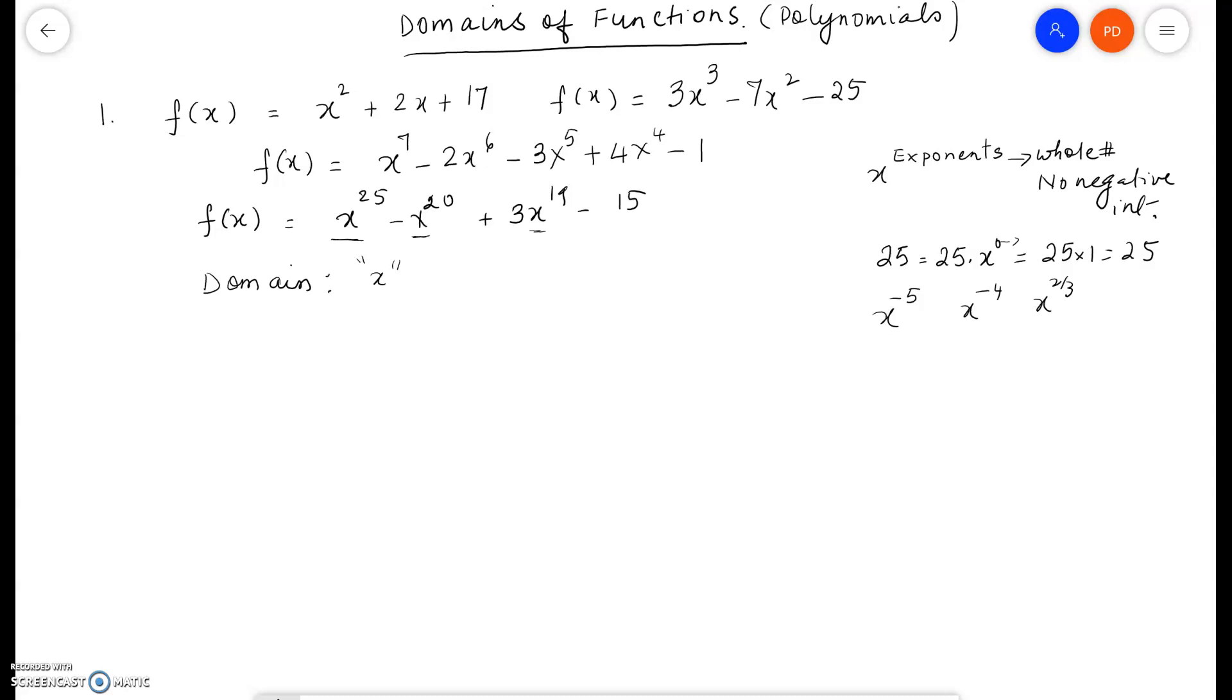I can plug in any real number in for x for a polynomial function in general. And if you look at each of these functions, you'll notice that it's the same thing. They're all polynomials. You can plug in any real number that you want into it. So, what does that mean? The domain is all real numbers and or you could write it in the interval form as negative infinity to positive infinity. So, any number on the real number line will work for this function.